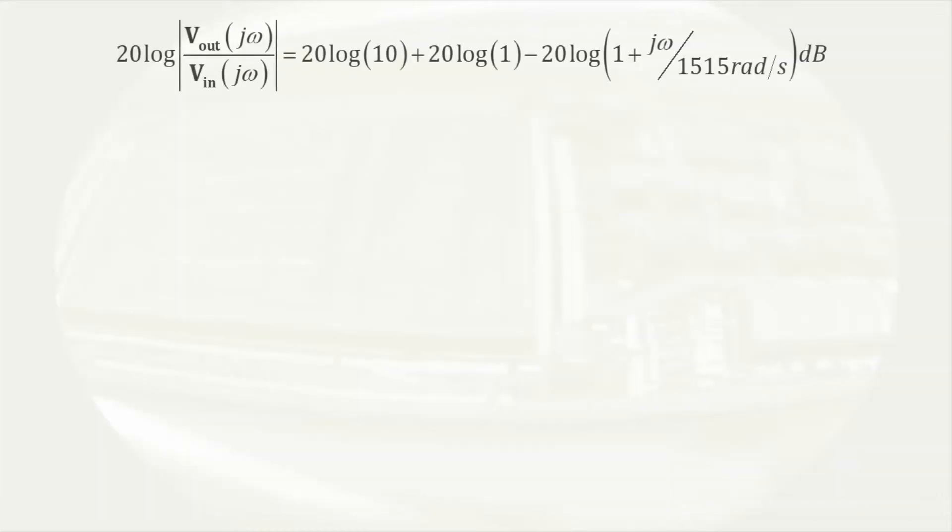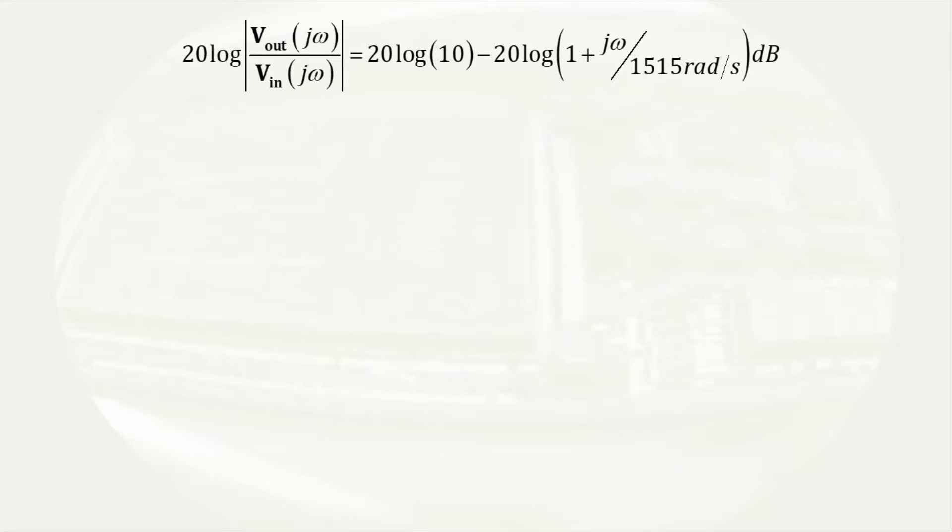Now we should try to generate a Bode plot of the same function. A Bode plot is a graph of the frequency response of a system where the decibel gain and the phase angle are plotted versus the log of frequency. Since we are working with logarithms, all of our products or quotients can be written as additions and subtractions. That means we will be able to determine the contribution of each of the terms in the transfer function and then combine the graphs. To begin, we can eliminate the term that has the log of 1. Adding 0 at every point is just busy work.